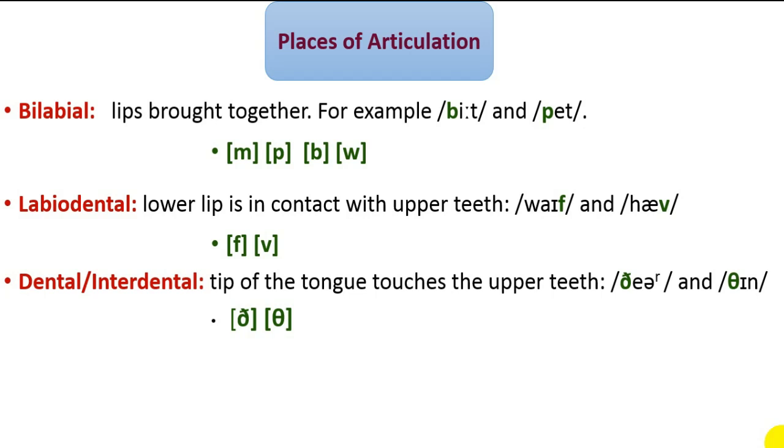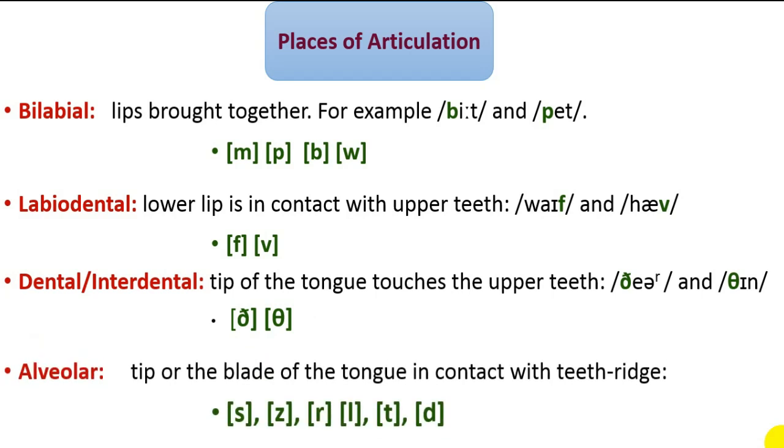The alveolar sounds: an alveolar sound is made with the tip or blade of the tongue touching the alveolar ridge. Some alveolar sounds are, among others: S, Z, R, L, T, and D.